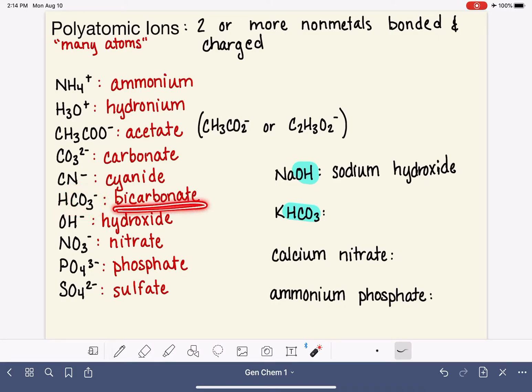And here we can see that our polyatomic ion is HCO3, which is this guy right here, and this guy's name is bicarbonate. So again, we name the cation first potassium, and we follow it up with the name of the anion bicarbonate.